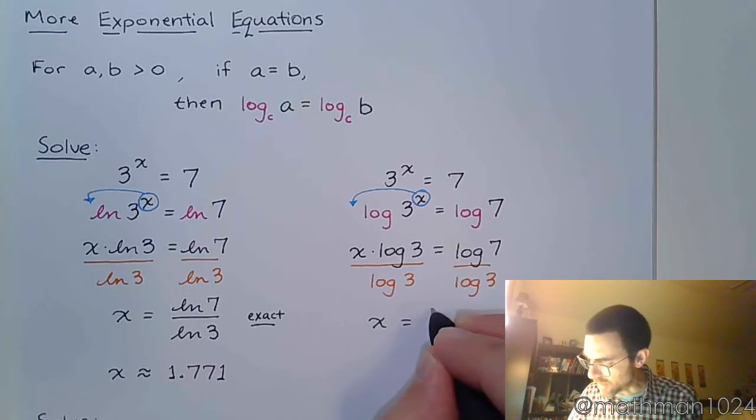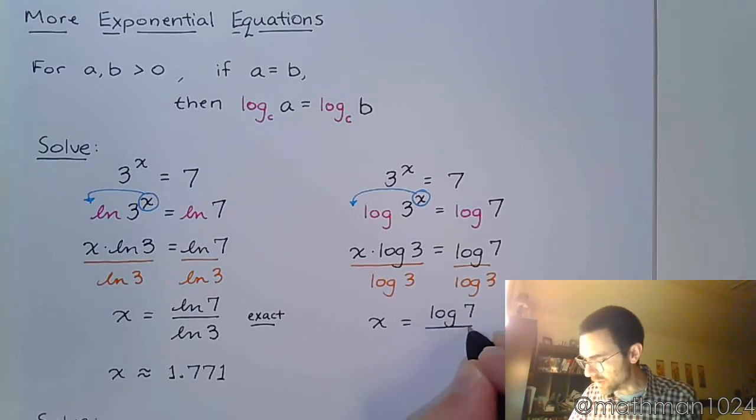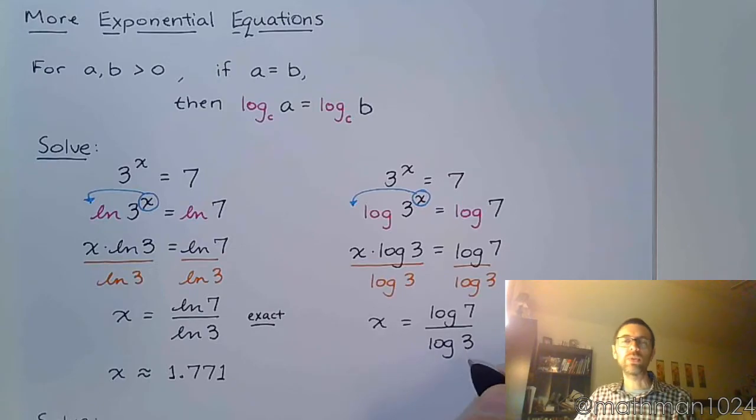So x as an exact value is log of 7 over the log of 3.